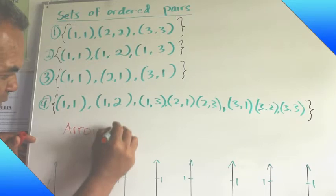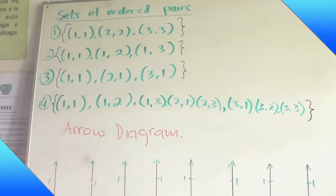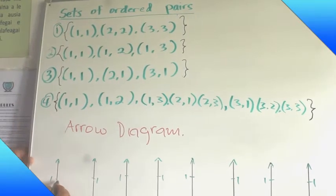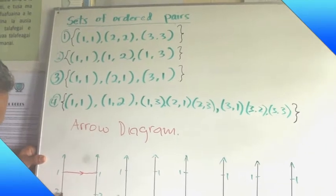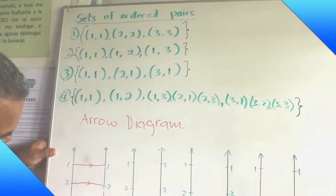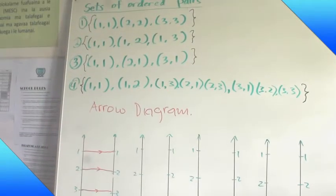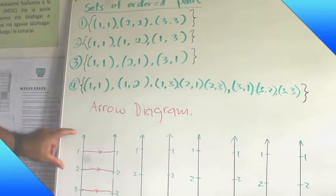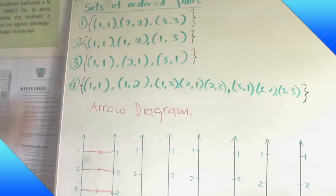Arrow diagram. From the first set of ordered pair, you can use the graph up here of arrow diagram to represent the first one. The first ordered pair is one to one, two to two, three to three.